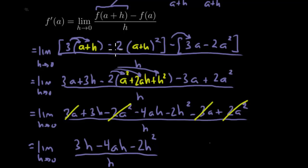Now, you know you're on the right track when everything on the numerator still has an h because we have this h right here, and we need to cancel that h. So I can factor out an h on the top, and that's going to leave me 3 minus 4a minus 2h all over h.